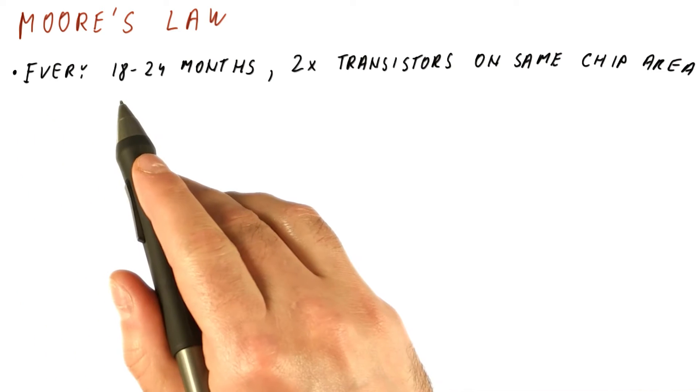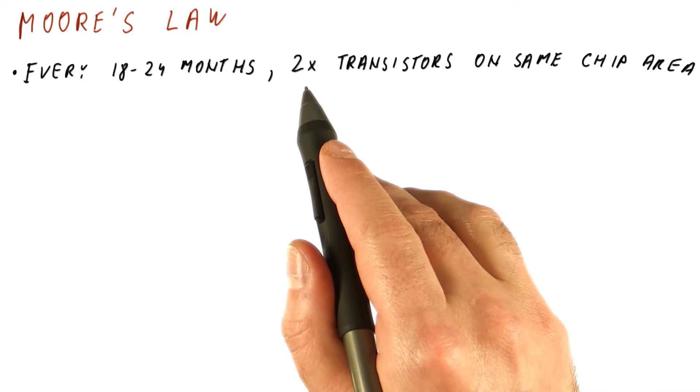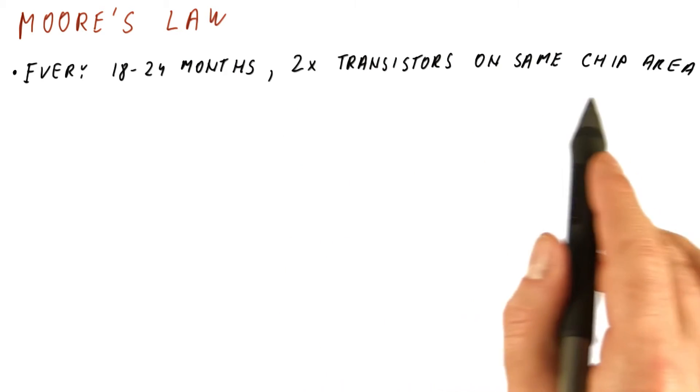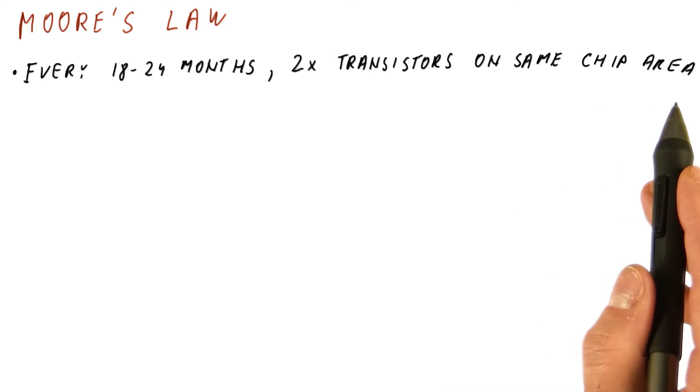Moore's law roughly states that every one and a half to two years, we will fit twice the number of transistors on the same chip area. So this is what technology improvement promises to do.